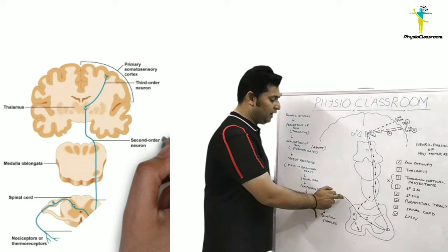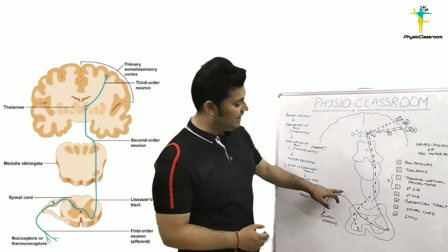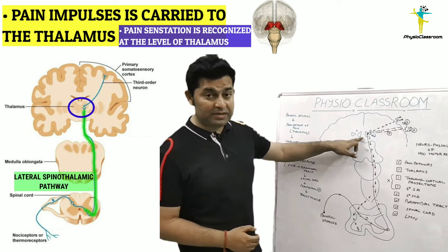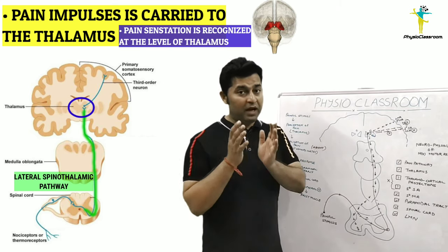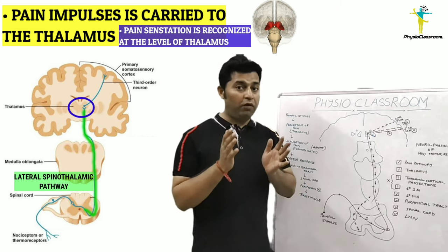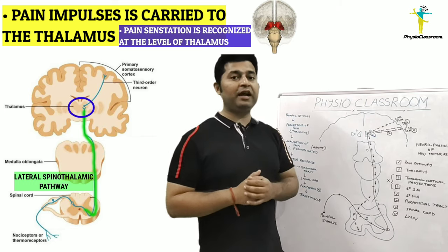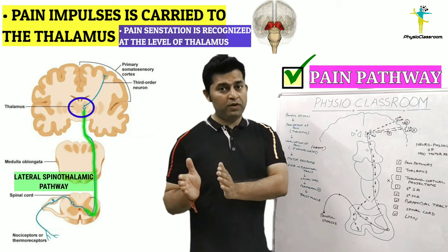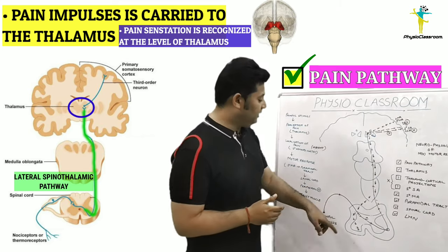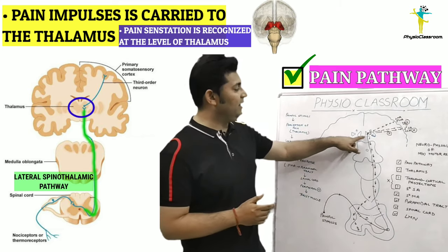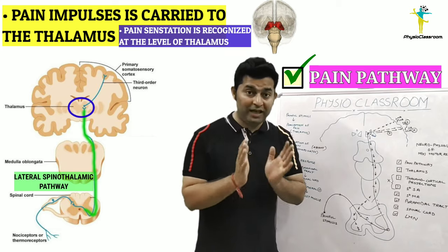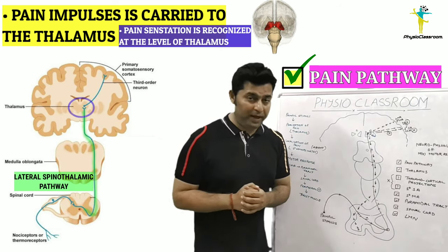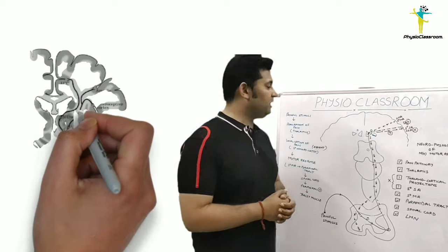Once the painful stimuli is perceived by the receptors and taken by the pain pathway up to the level of the thalamus, the patient's brain becomes aware of the presence of pain. The first thing to remember is that in the M4 GCS motor response, we can be assured that the pain pathway is intact up to the level of the thalamus — that is, the patient is able to perceive the pain.